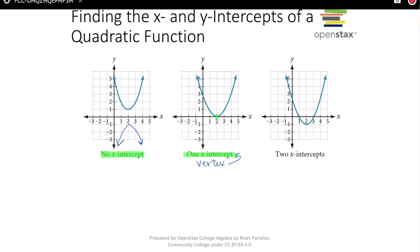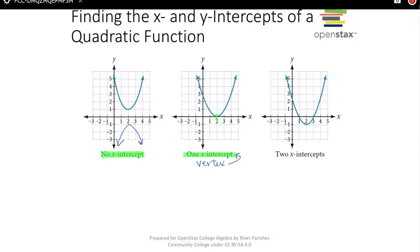And then you have the typical two intercepts, where it crosses the x-axis twice. So those are the three possibilities.